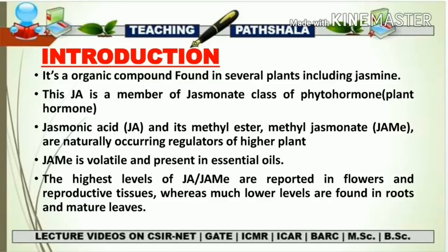JA and its Methyl Ester, known as Methyl Jasmonate, are naturally occurring regulators of higher plants — meaning both act as phytohormones. Methyl Jasmonate is a volatile compound and is present in essential oils. The highest levels of JA or Methyl Jasmonate are reported in flowers and reproductive tissue, whereas much lower levels are found in roots and mature leaves.